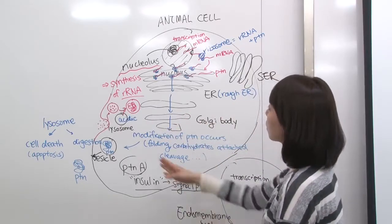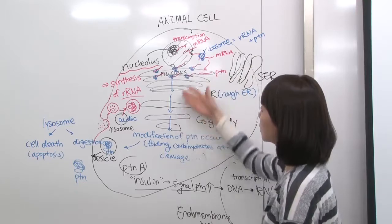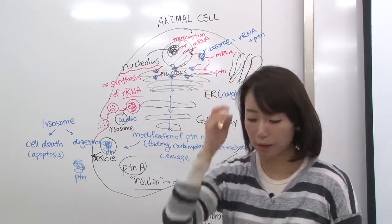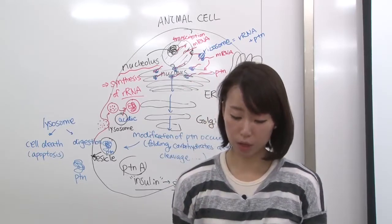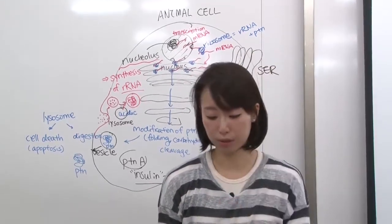In eukaryotic cells, protein gets synthesized through these structures. Today, we're going to talk about different organelles that exist in animal and plant cells.